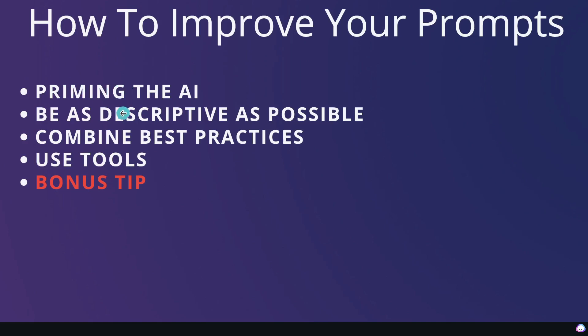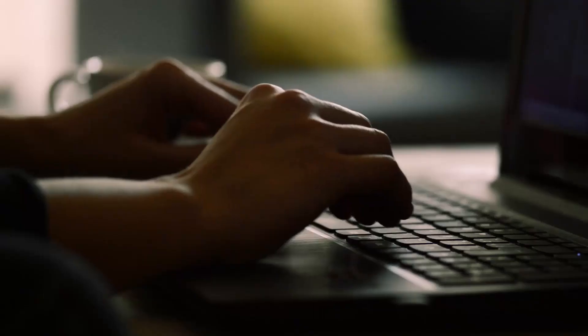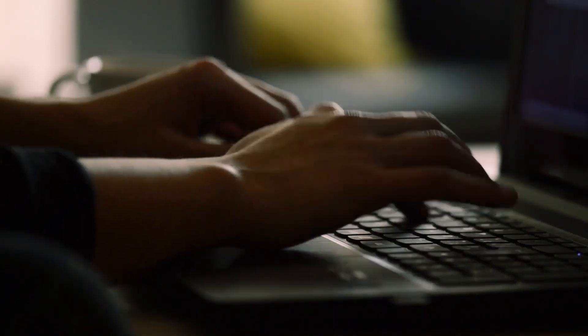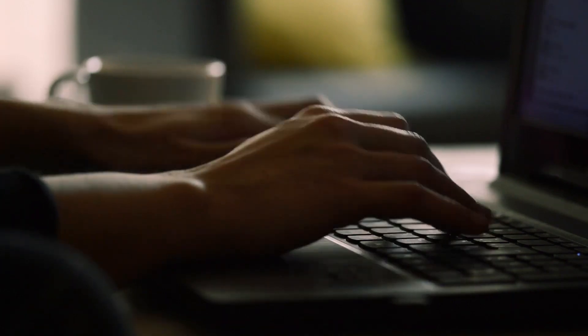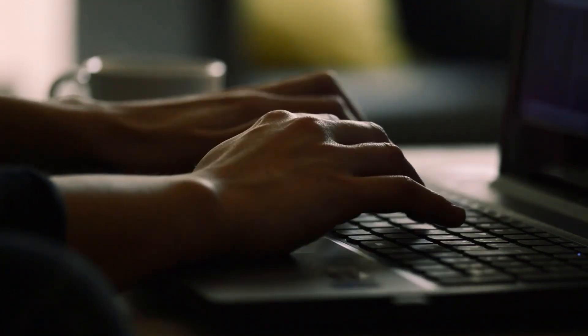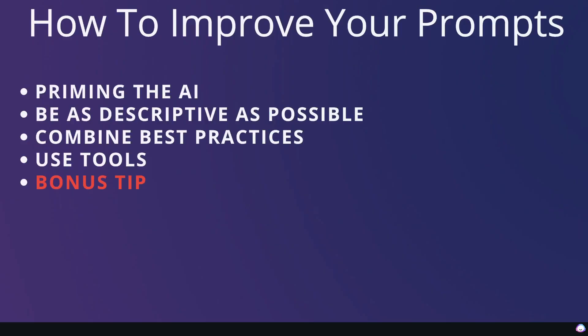The second tip is that you need to be as descriptive as possible. Tell the AI exactly who you're speaking to, exactly what the topic is, and exactly what style or tonality you need in the output. My third tip is that it's good to combine best practices — there's no one-size-fits-all when it comes to prompting. It's really a game of experimentation, so take best practices from different YouTubers, blogs, and articles and put them together for your specific use case.